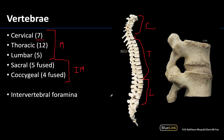The fused vertebrae include the sacral vertebrae forming the sacrum, and generally four fused coccygeal bones that form the coccyx. There can be some variability in the number of bones associated with the coccyx, and they become more rudimentary the more inferior you get.